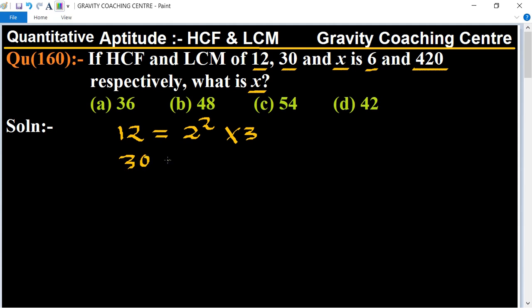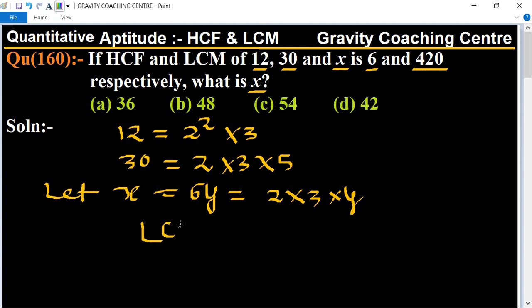The prime factor of 30 is 2 × 3 × 5. Let x = 6y = 2 × 3 × y, and the LCM is given as 420.